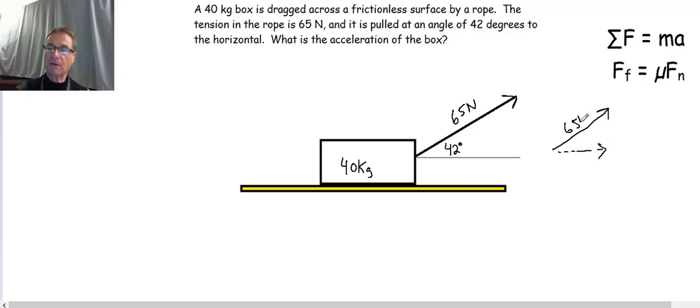So this is 65 Newtons. I need to know what the x component of that force is. Well if I want to know what the x component of that force is, I'm going to have to use some trigonometry. If this is 42 degrees in here, the trig function that's going to get me that value is going to be the cosine function.